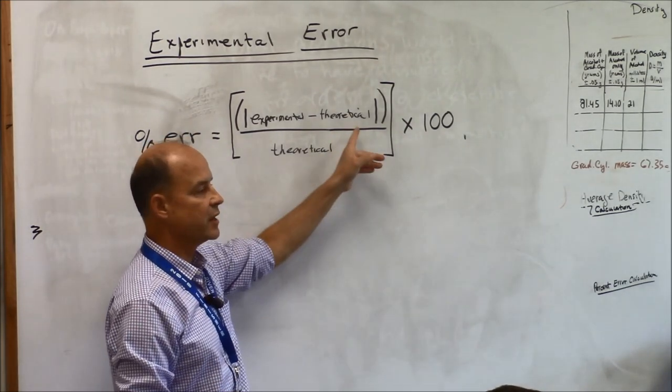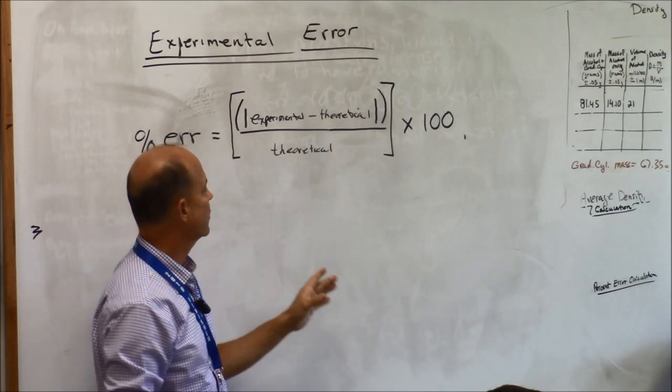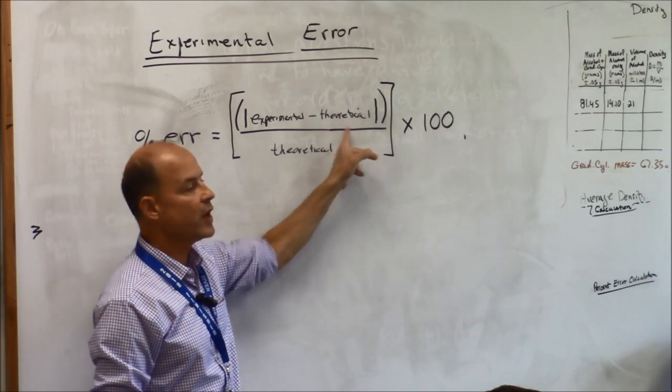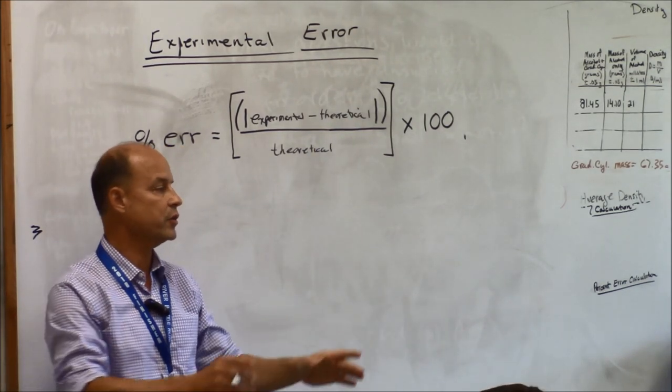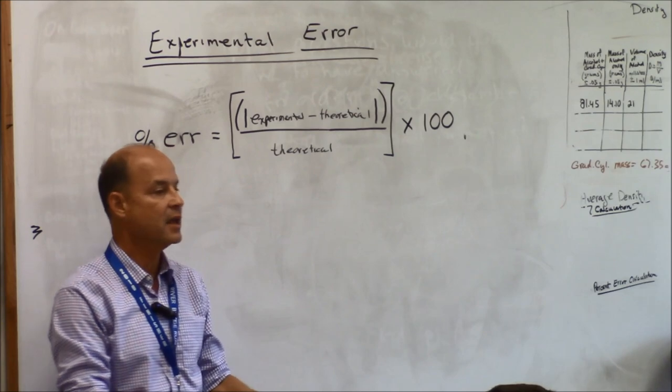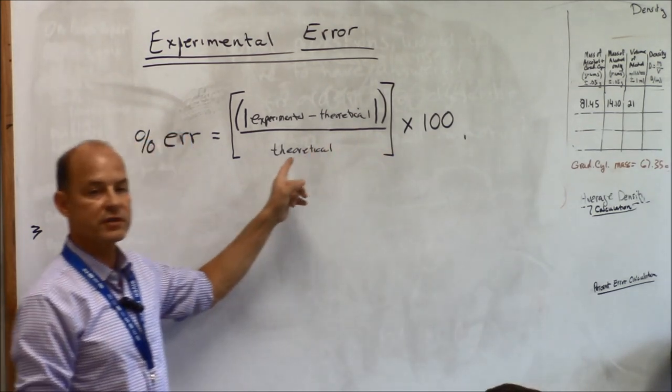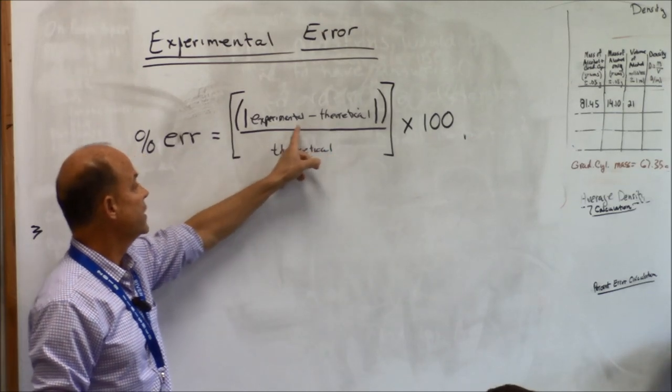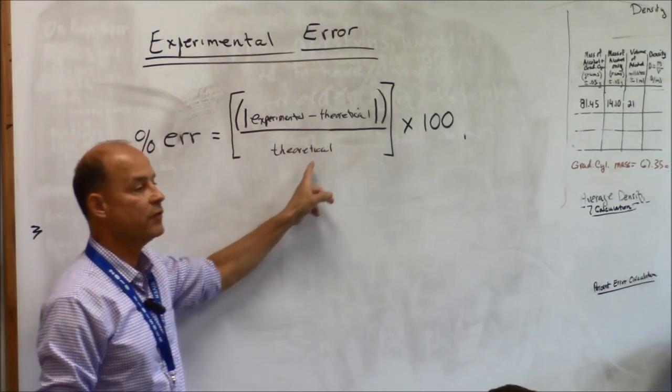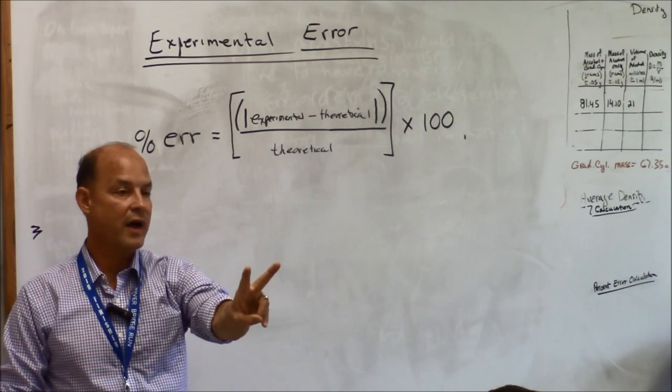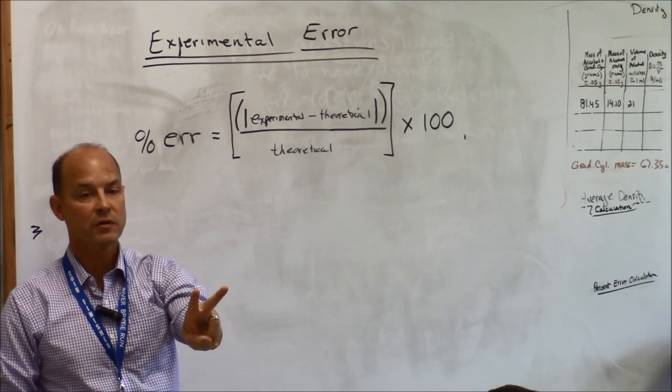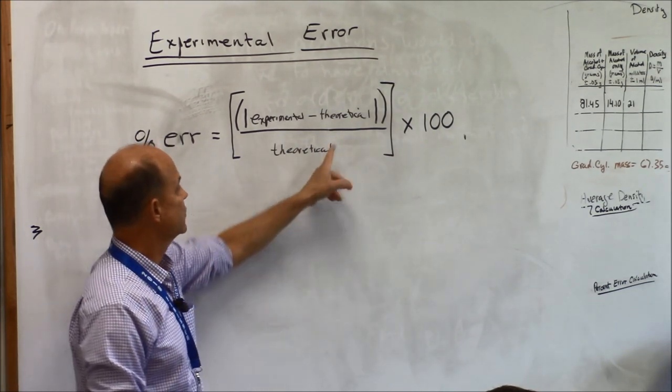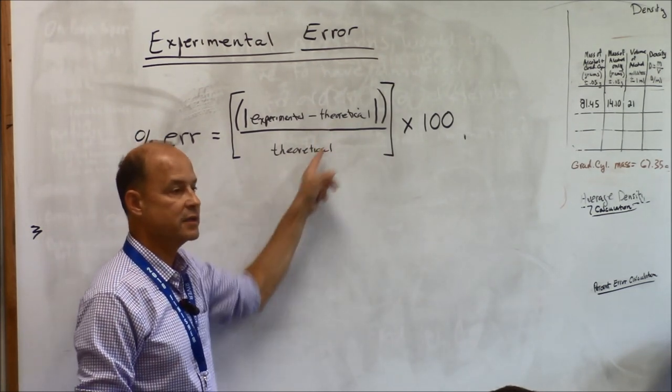Your experimental value is the one that you determined. Your theoretical value is the one that Siri will tell you or you'll look up in a textbook or something like that. The way you remember this equation - and quite often I ask my students to memorize this because it's important - is experimental minus theoretical over theoretical. Use theoretical twice because it's the most important.